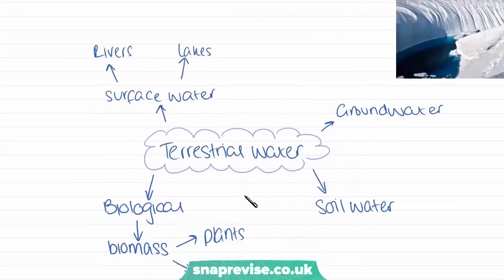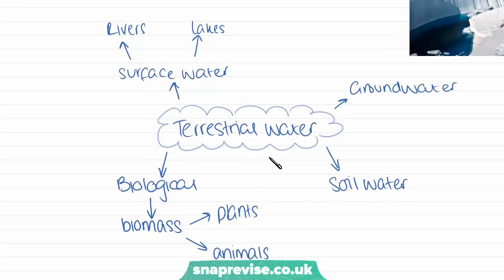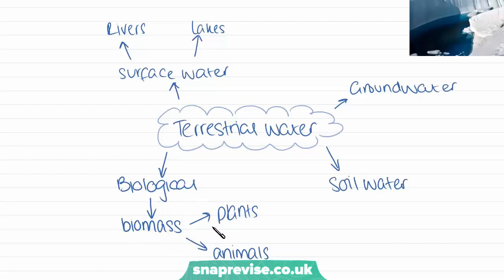The next store we have is terrestrial water. Terrestrial water is fresh water on the Earth. This includes surface water, such as rivers and lakes. We have ground water, which is simply the water held within the ground. Soil water is water held within the soil, and also biological water, which is water stored within biomass — within plants and animals. As you may know, humans are made up of 70% water, so a lot of water is locked up within biomass.